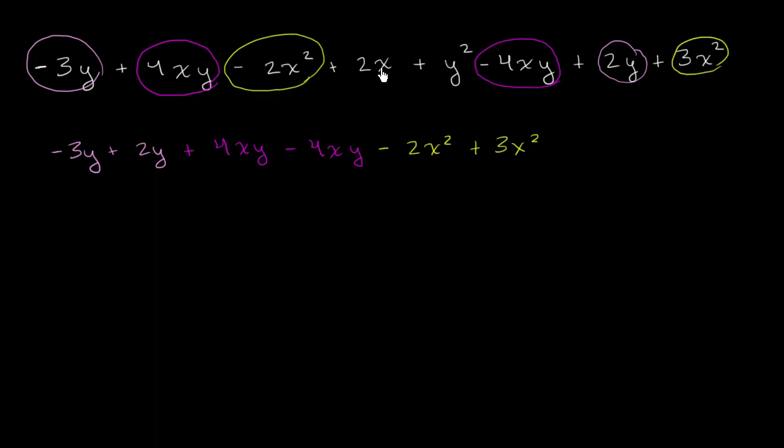And then I have an x term right over here, and that looks like the only x term. So that's plus 2x. And I only have one y squared term. I'll circle that in orange. So plus y squared. All I've done is reordered the expression and color coded it based on the type of term. Now it should be a little bit simpler.